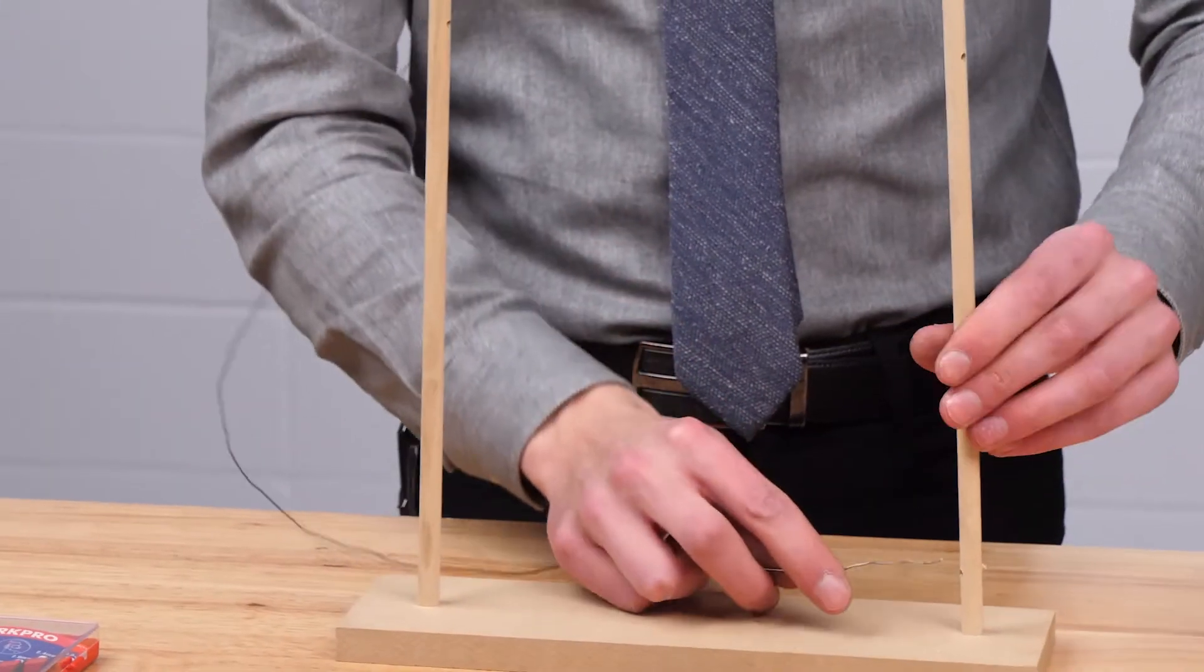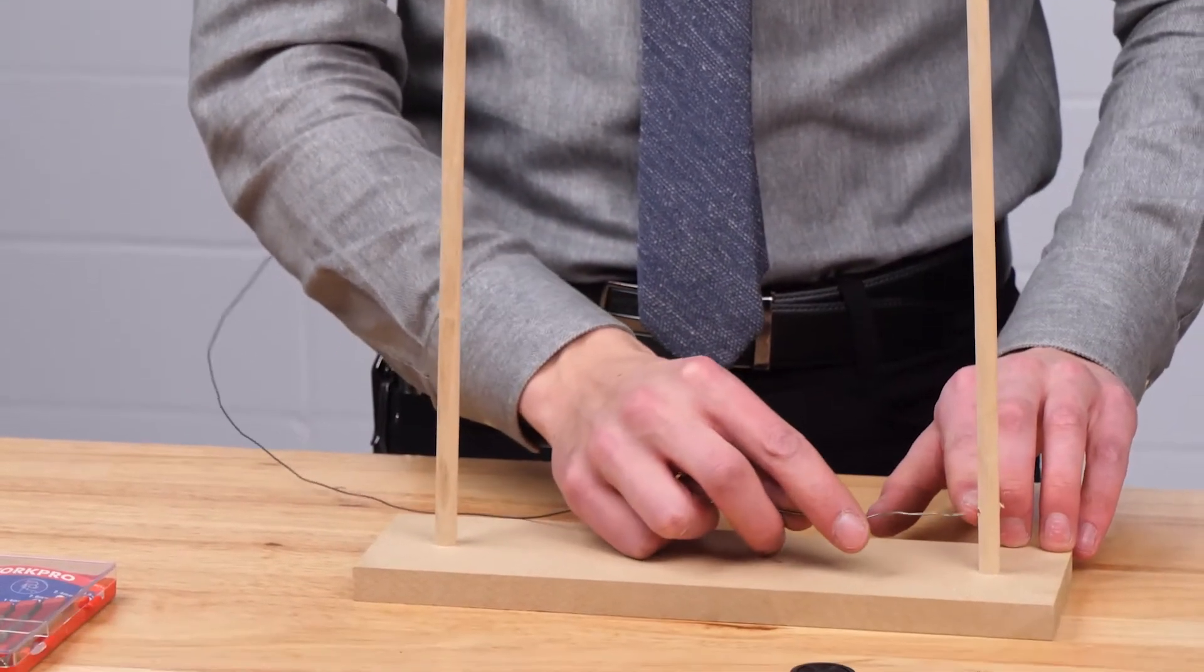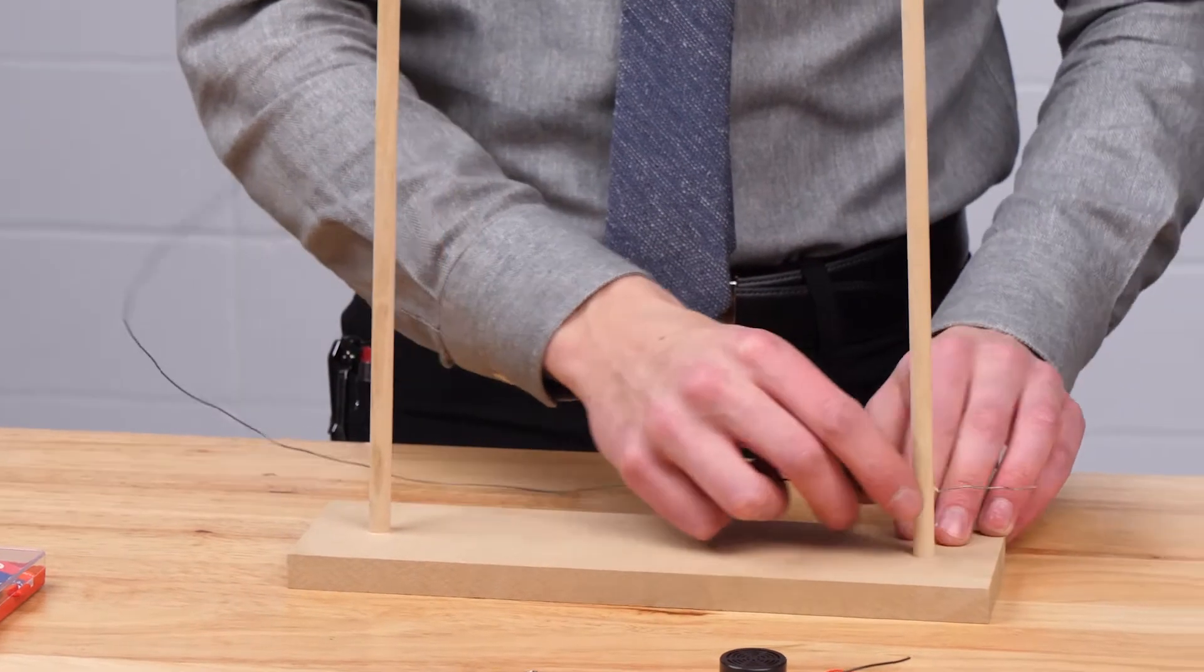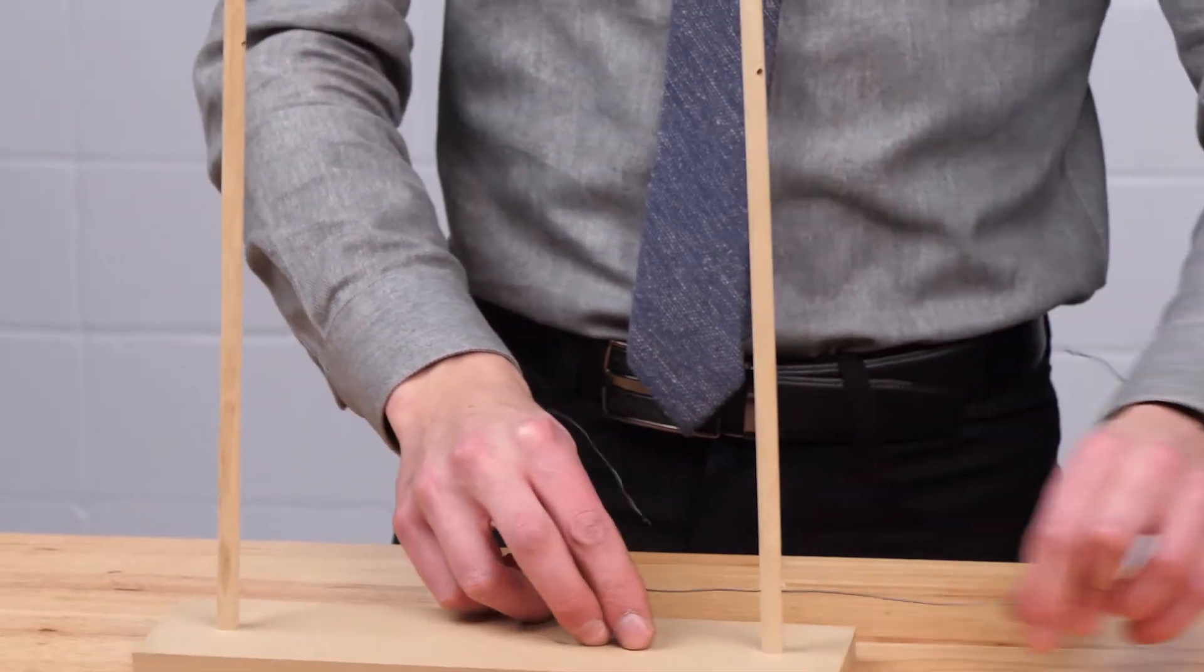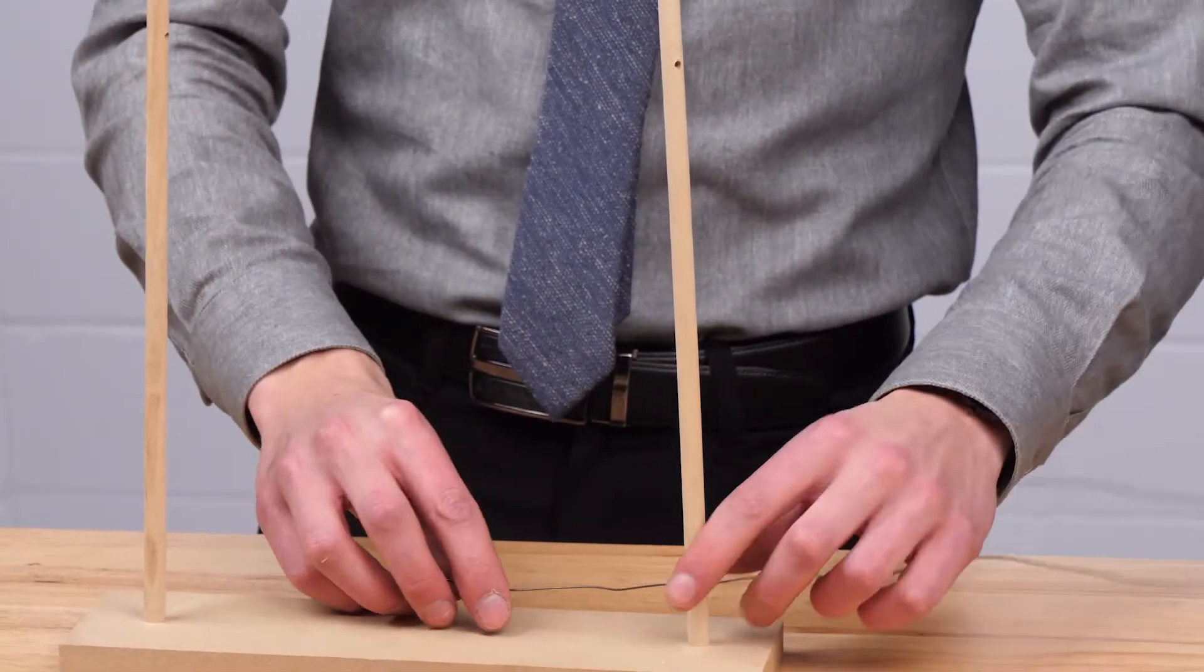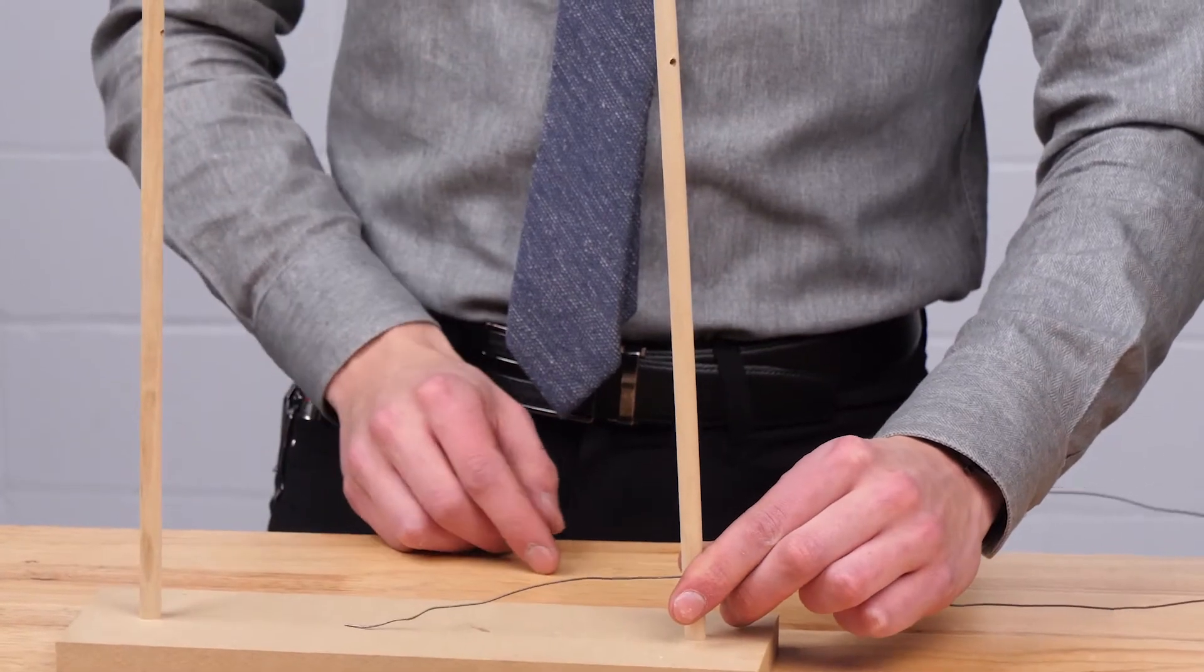We're going to thread the steel wire through the bottom hole in the dowel with two holes, and we're going to leave about five inches on the inside there.